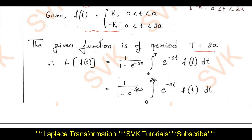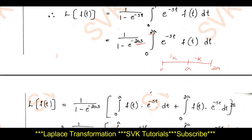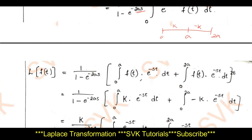Substituting T = 2a, the integral from 0 to 2a is split into 0 to a and a to 2a. In the interval 0 to a, f(t) = k; in a to 2a, f(t) = −k. Knowing this, I substitute f(t) = k and f(t) = −k into the respective integrals.